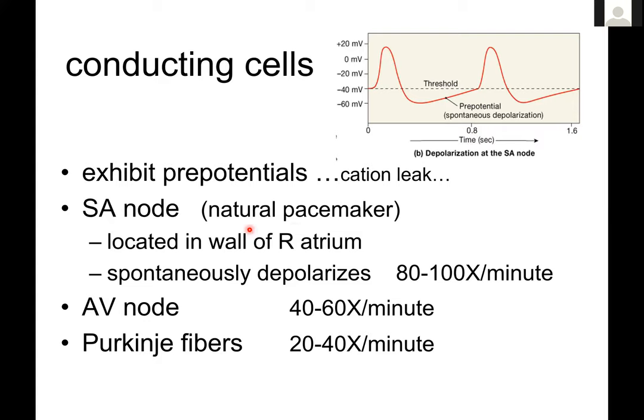The SA node is what's called the natural pacemaker. Typically if somebody has a pacemaker installed surgically, the SA node is what's being replaced. It's in the top wall of the right atrium and, all by itself due to these leak channels, it spontaneously depolarizes between 80 and 100 times per minute. By spontaneously, I mean it does not do this in response to a signal from the autonomic nervous system — it goes on its own. Hearts do beat outside the body on their own without innervation from the autonomic nervous system. The autonomic nervous system modulates the heart, but the heart initiates its own sequence of depolarization.